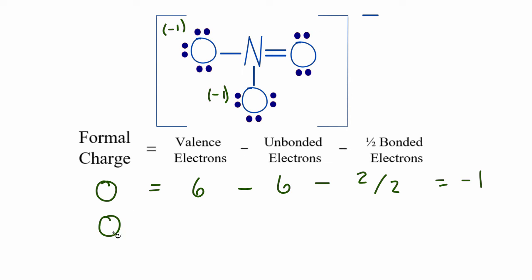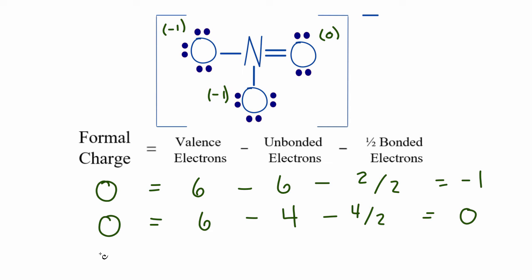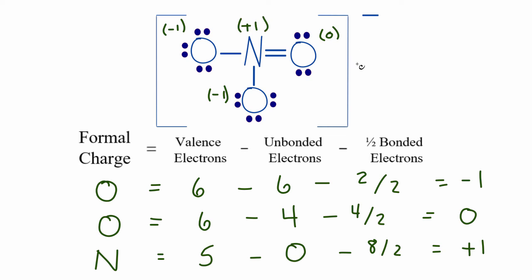For the oxygen with the double bond: six valence electrons minus four unbonded electrons, minus four bonded electrons divided by two. Six minus four minus two gives a formal charge of zero. For the nitrogen in the center: five valence electrons minus zero unbonded, minus eight bonded electrons divided by two. Five minus zero minus four gives a formal charge of plus one. Adding up: negative one, plus one, and negative one gives an overall charge of negative one, which matches the nitrate ion.